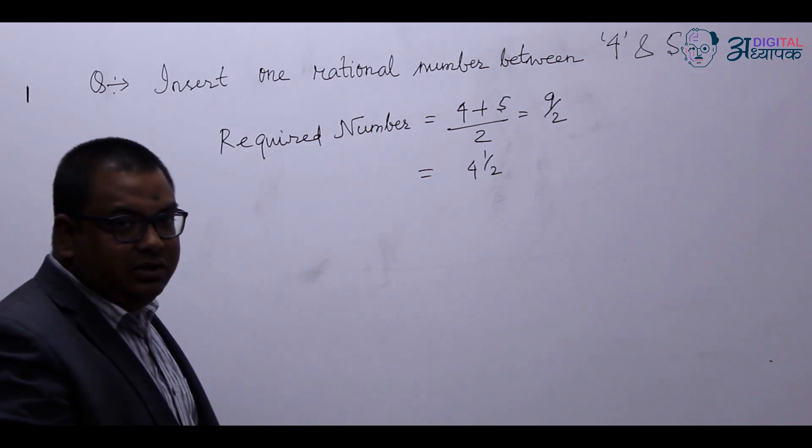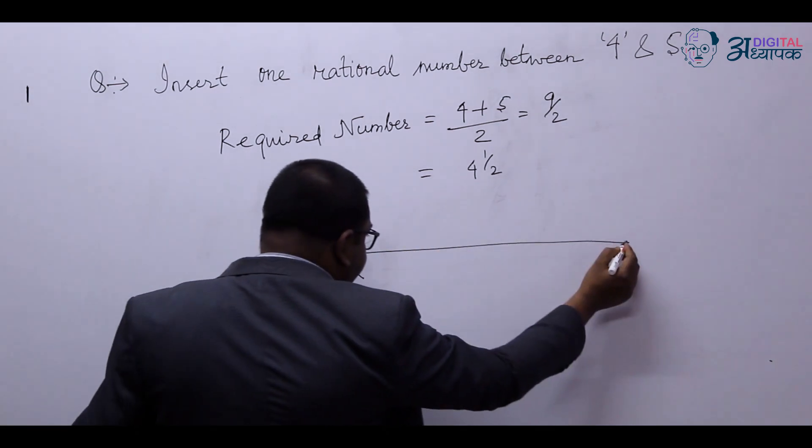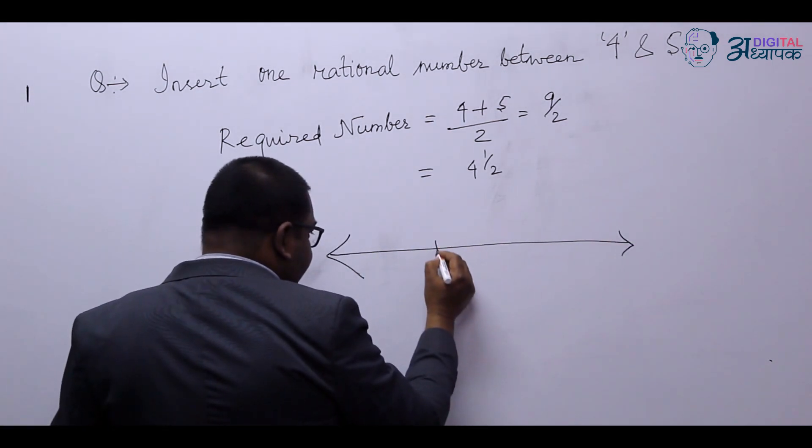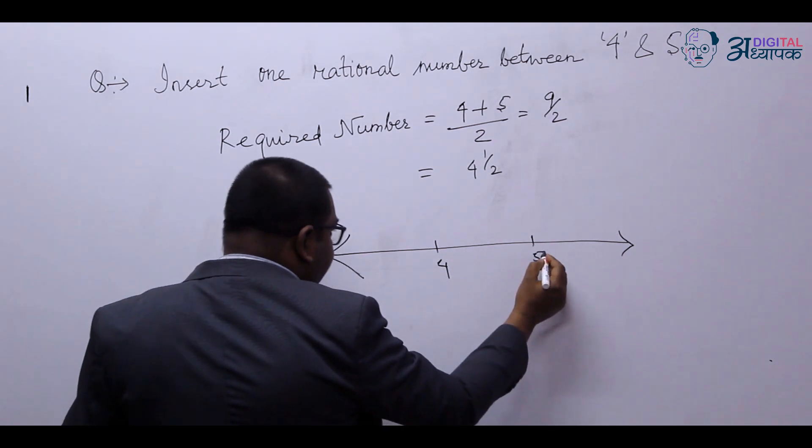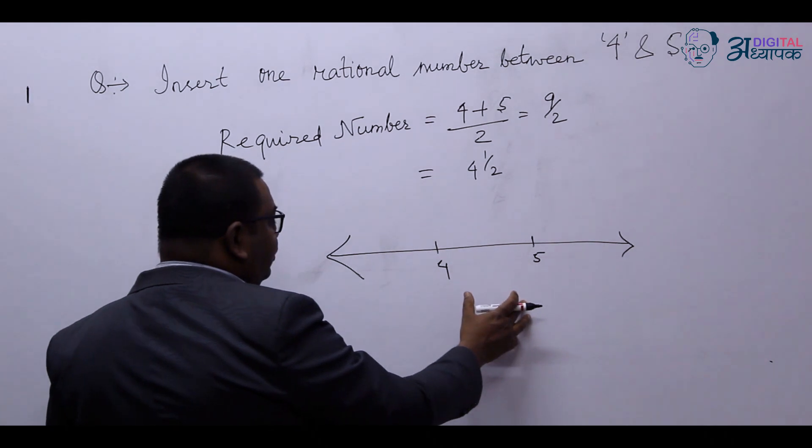Now if you want to check it on the real number line. Suppose this is your real number line. Here we have 4 and here we have 5. So we can divide the place between 4 and 5 into two parts.